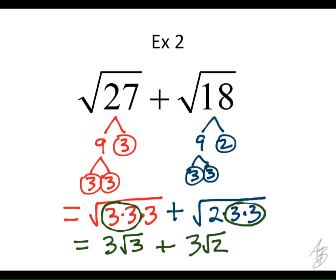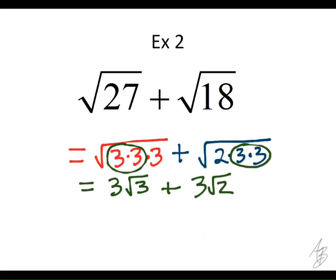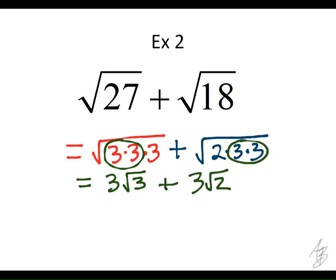Now I'm not done simplifying those, am I? Circle the pairs. We have a pair of 3s in the square root of 27, so that's going to be equal to 3 square root of 3. And in the square root of 18, circle the pair of 3s — that's going to be 3 square root of 2. We put a plus sign in between. Can I add these together since both have a 3 out front? What has to be the same for us to add them? The inside — the radicand, right? Since 3 is different from 2, I cannot add these together.